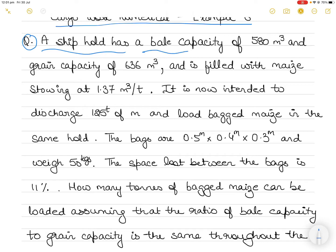In this question there is a ship with a hold which has a bale capacity of 580 cubic meters and grain capacity of 636 cubic meters. Bale capacity refers to the bagged cargo that can be carried, and grain capacity refers to the maximum capacity. Bale capacity includes the stiffeners and platings in calculating the volume, whereas grain capacity excludes the stiffeners and platings — it includes the maximum volumetric capacity of a cargo hold.